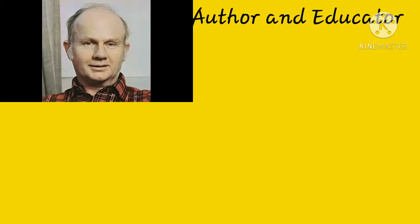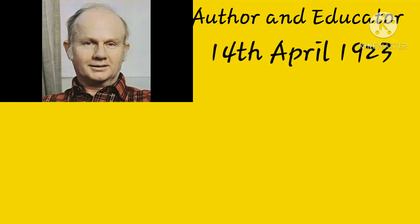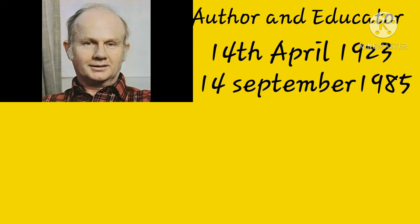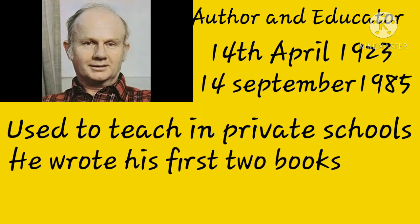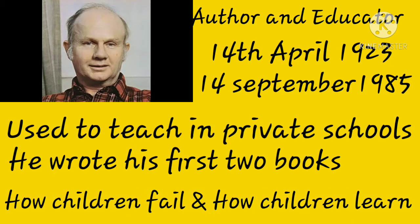Let us describe something about John Holt. He was an author and educator. He was born on 14th April 1923 and died on 14th September 1985. He taught in private schools for many years, after which he wrote his first two books: 'How Children Fail' and 'How Children Learn.' These two books became very popular and started Holt's career as a consultant to American schools. He has written a total of 11 books on the subject of schooling.